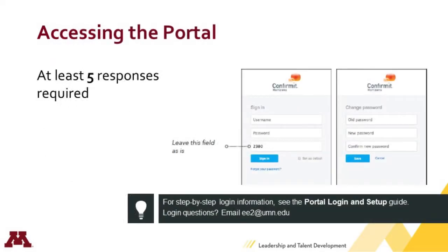Let's start with accessing the online data portal. On approximately January 4th, senior leaders and HR leads will receive an email from Korn Ferry the Hay Group with access instructions for logging into the online data portal. At the end of January, tentatively the 29th, a similar email will be sent to all managers who had at least five responses from direct or indirect reports. Note that you'll be required to change your password when you log in for the first time. Passwords must be at least eight characters and include at least one capital letter and one number. Keep that in mind because those password requirements won't be indicated on the login screen.